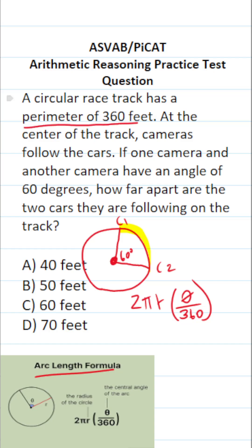And thankfully enough, we know this information. According to the problem, it says the perimeter of this racetrack is 360 feet. Perimeter and circumference mean the same thing. In other words, a circular racetrack has a circumference of 360 feet. So 2πr is going to be 360.